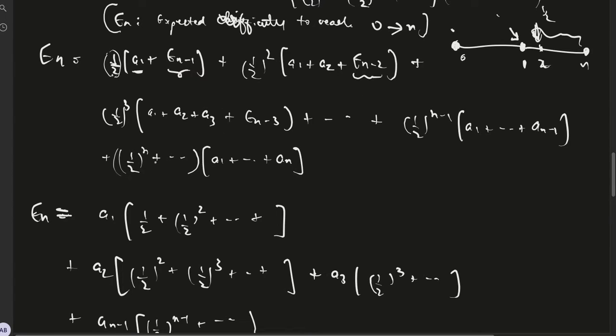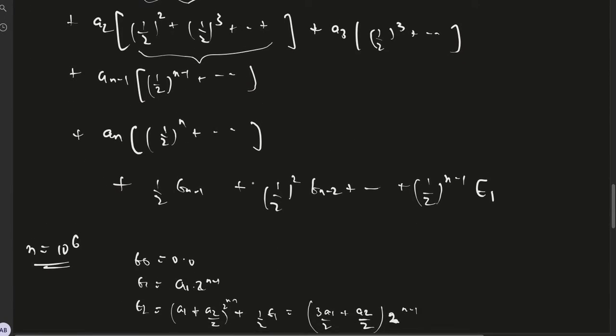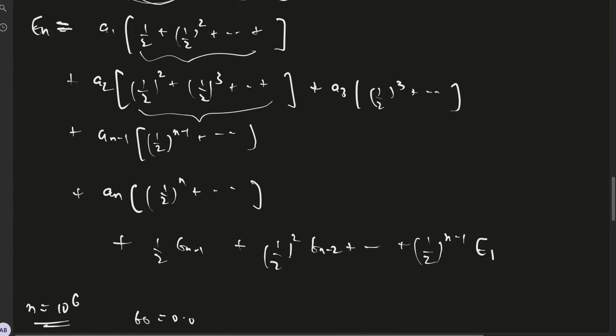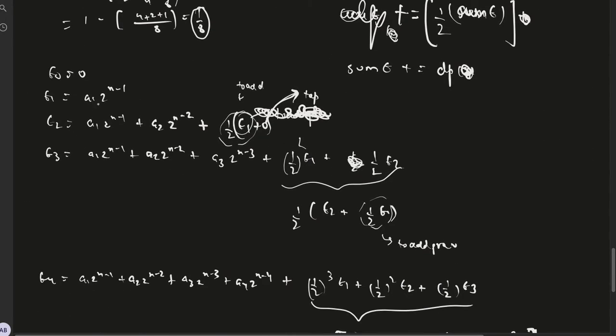We continue till we reach n minus 1. For n, the probability changes because all the probabilities from n to infinity are concentrated in n since we can't go beyond n. Now we can cluster all the terms involving a1, cluster all the terms involving a2, and so on to get this progression.